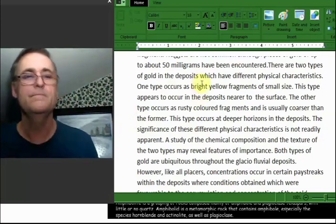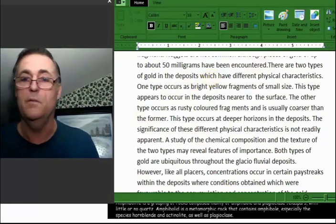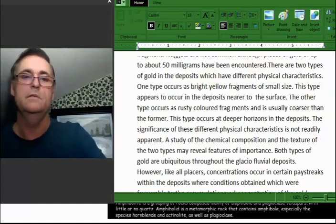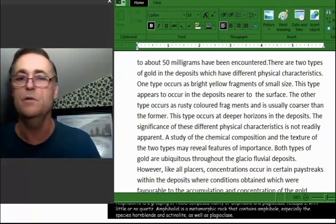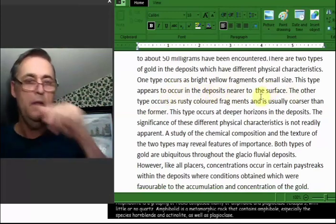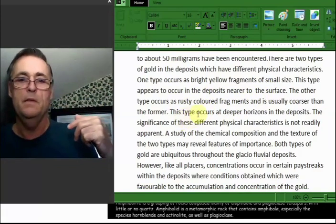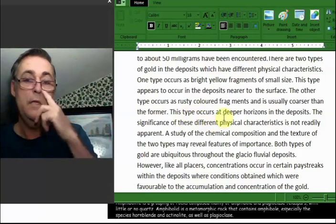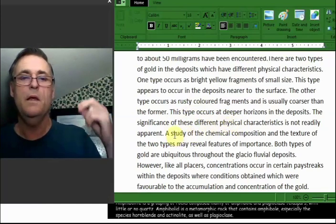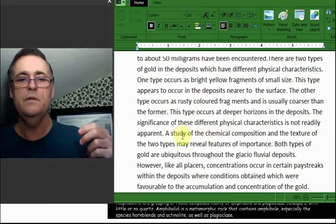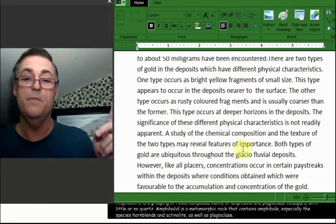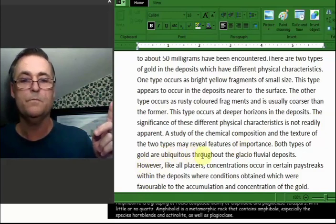So likelihood, slim. But that's what gold hunting is all about. It's about going after something. See, we know the placer gold is there. This is from the Milnet area, this report I'm reading to you about the shot size gold. This type occurs in deposits near the surface. The other is rusty colored fragments. This type occurs at deeper horizons in the deposits. Now usually that's bedrock, but it might be above. The significance of these physical characteristics is not readily apparent. A study of the chemical composition and the texture of the two types may reveal features of importance. But that I know of, nobody's done that study.